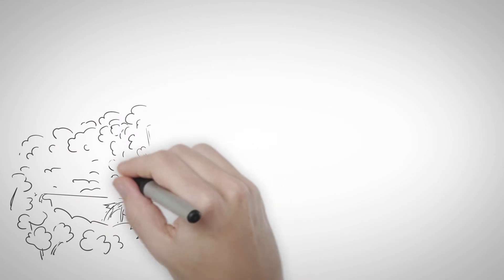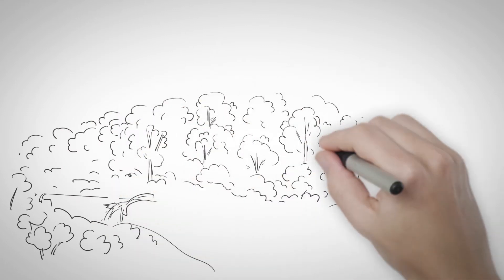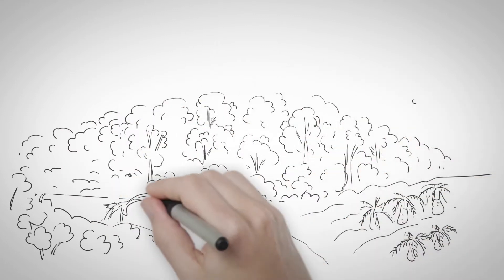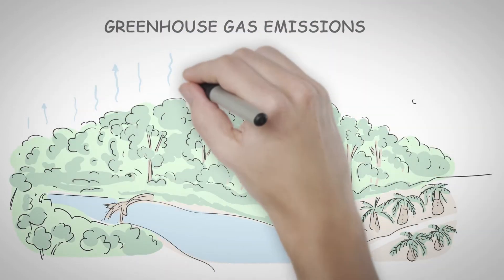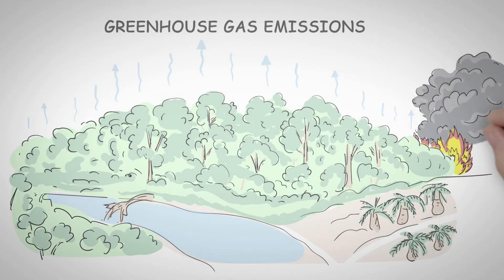Draining of peatlands causes gradual lowering of the land surface due to the drained peat shrinking, consolidating and becoming denser. This leads to greenhouse gas emissions and increases the risk of fires.